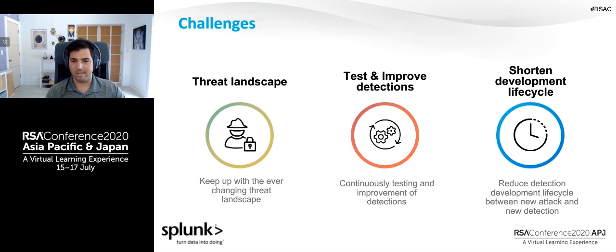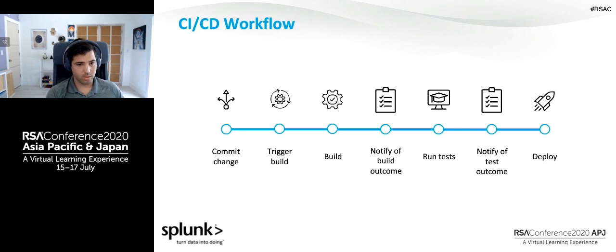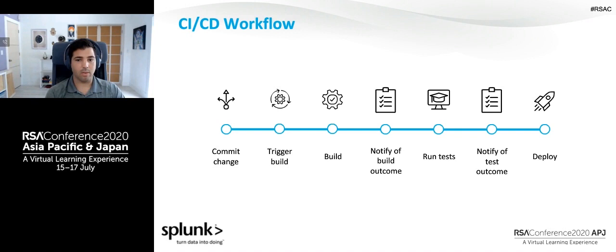What do we mean by testing detections? Think of the CI/CD workflow a typical software developer runs through in a software development lifecycle. You first commit a change. That commit triggers a build process that runs through a continuous integration pipeline that builds whatever code or app you're building, then notifies you whether the build was successful. A bunch of tests run to make sure that the build is ready for production, and ultimately you end up deploying that software to production.